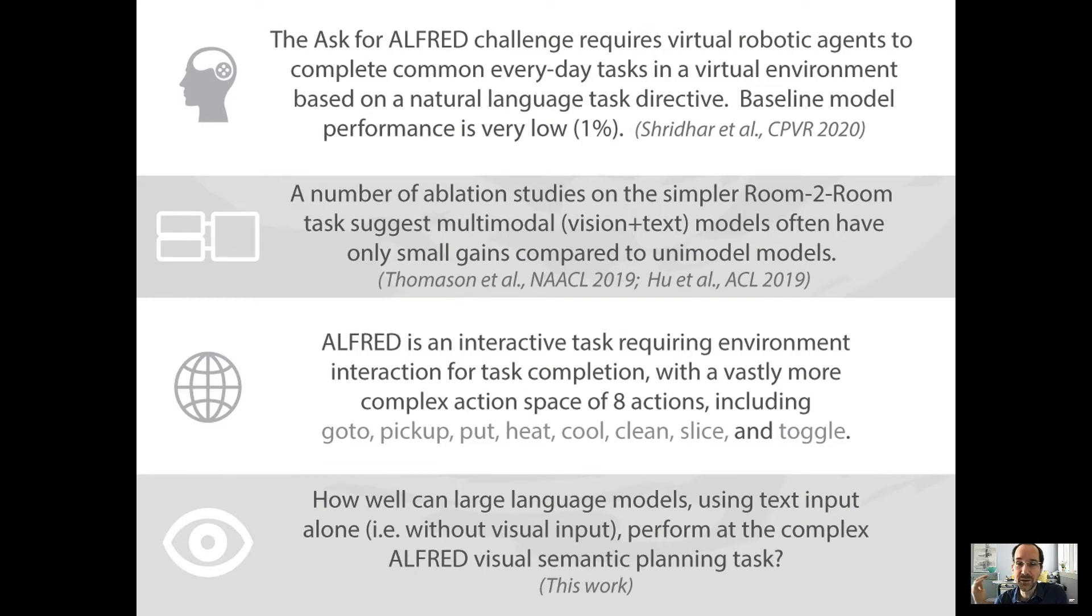Typically, as one might expect, models perform these visually grounded language tasks by combining both text input in the form of that natural language directive, as well as visual input in the form of pixels from the environment. But a number of recent papers have shown that, at least on much simpler environments like room-to-room, when they run ablation studies on their models, the models that use input from only a single modality, like text or vision, seem to perform not that much worse than the full model. That begs the kind of ridiculous question: how well could a visually grounded agent perform if we gave it no visual input, if we used a model that was primarily intended for dealing with text? And that's the question this study asks.